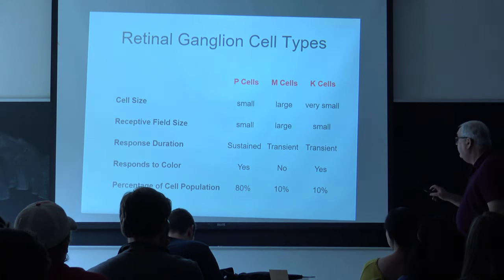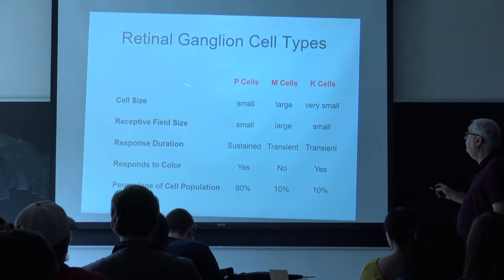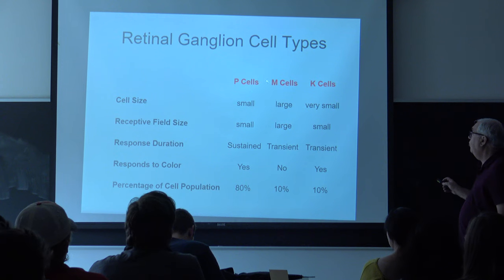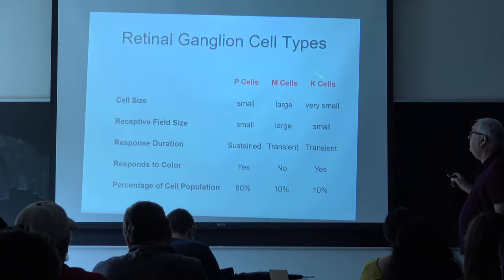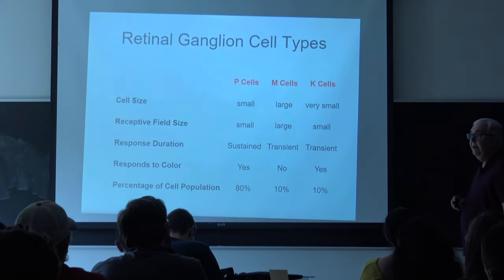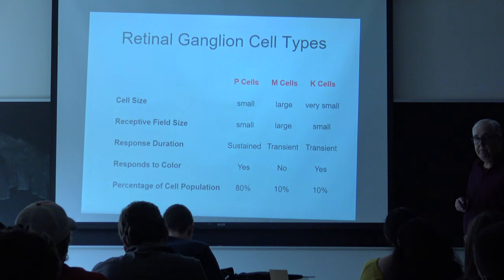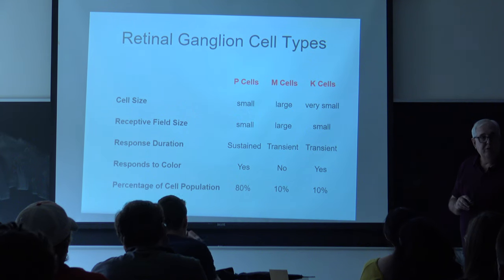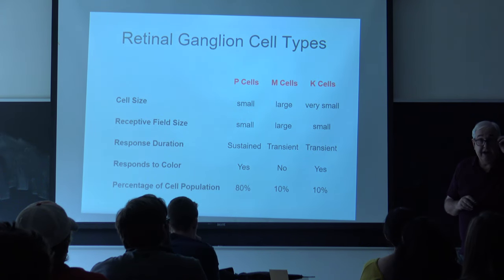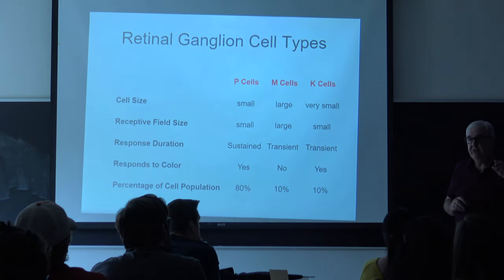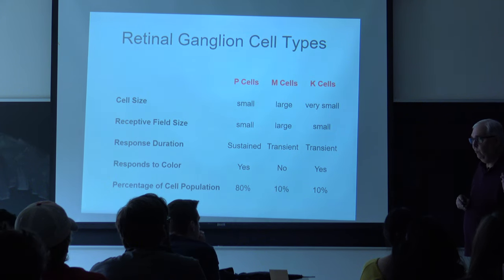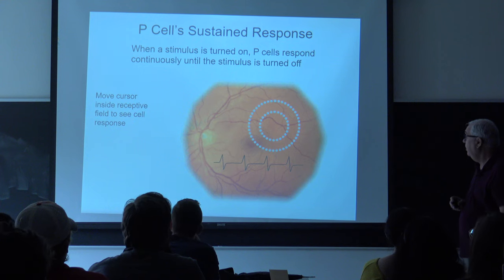Three different kinds of neurons are in the optic nerve: P cells, M cells, and K cells. I had a Flash demonstration that showed how these work, and we'll see in a moment whether they actually installed Flash on this computer.